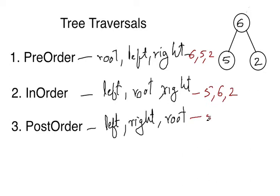And for postorder, first left child, then right child, then go to root. This is how preorder, inorder, and postorder works on a trivial or small tree of node 3 or of height 1.